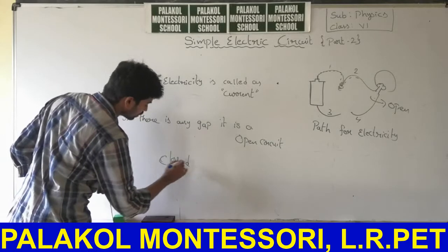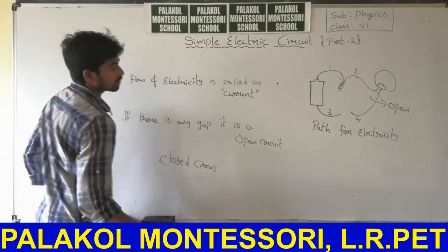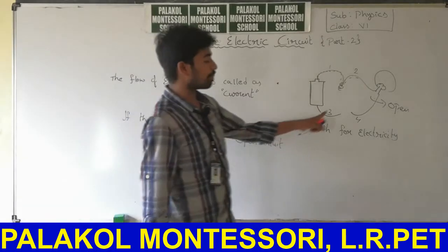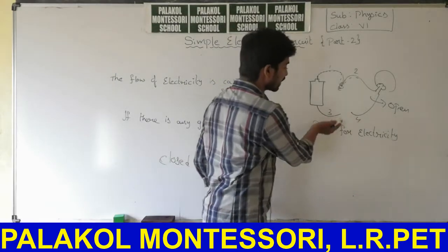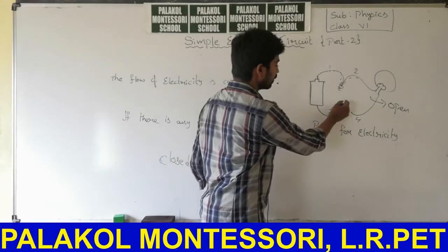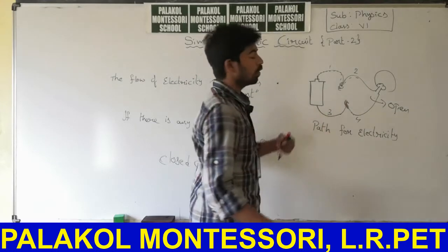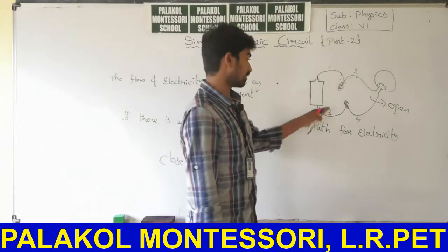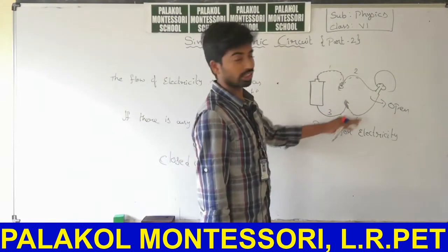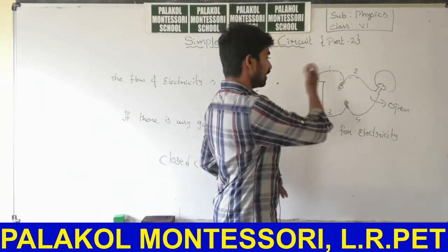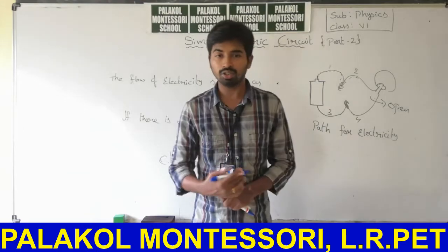The bulb will glow when the circuit is closed. When the circuit is closed, if you ask is it open or closed — if there is a gap here it is an open circuit. If you connect this gap, then this is a closed circuit. If there is any gap, open circuit; if the circuit is completely closed, then it is a closed circuit.